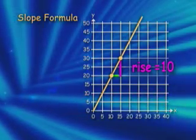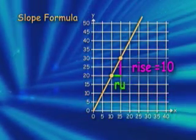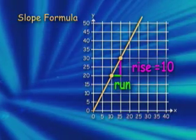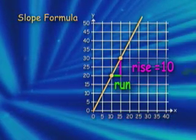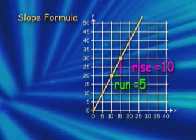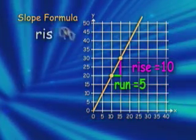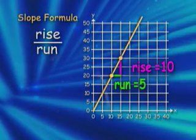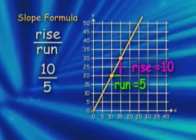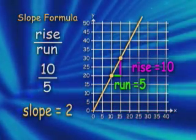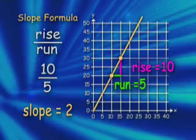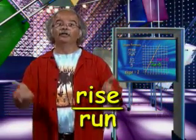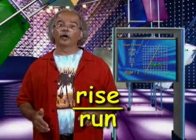The horizontal distance is called the run. In this case, from 10 to 15, that's 5, so the run is 5. By putting the rise over the run, you can arrive at the slope. 10 over 5 is 2 — the slope is 2. Rise over run is just one more way of expressing the slope.